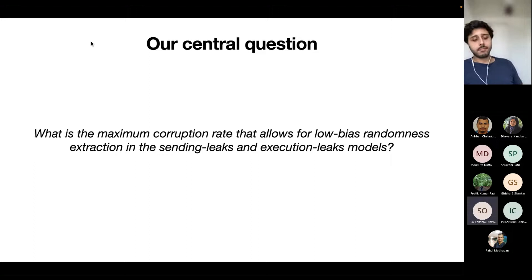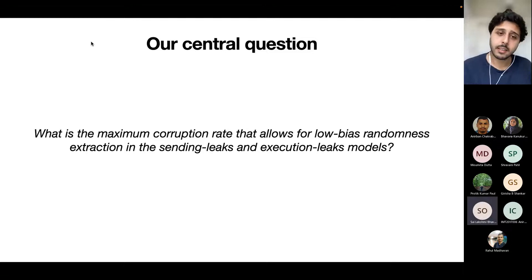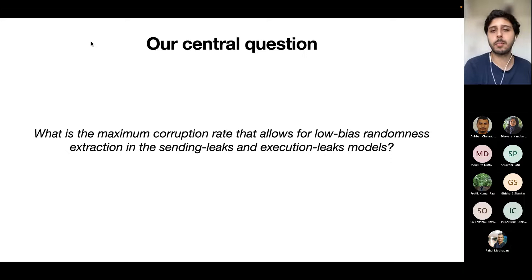What is low-bias randomness — are we not extracting statistically close randomness? Yes, when I say low bias, I mean close to uniformly random. The bias is the probability that the coin equals one minus one half. Low bias is just another name for statistically close to uniform.